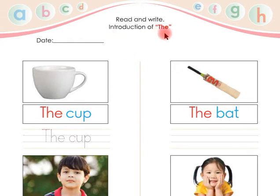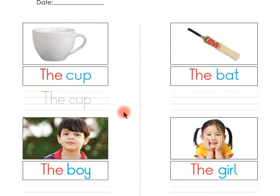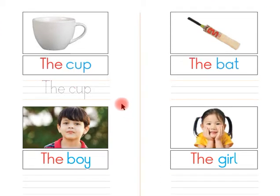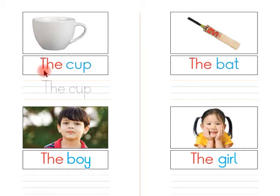We use the word 'the' with something special, something specific. Look at this, children: the cup. Listen again, children: the cup. Listen one more time, children: the cup. Now say with me, children: the cup.